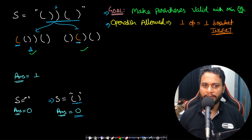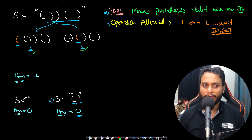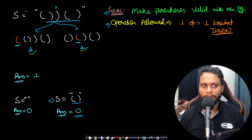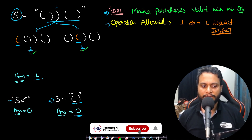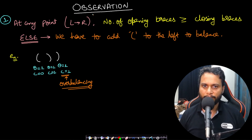If you add it at position three it also becomes balanced with one operation. The insert can be done at any position and we only need to return the minimum number of operations to make the string valid. The answer in this case is one. For an empty string or already valid string, the answer is zero.